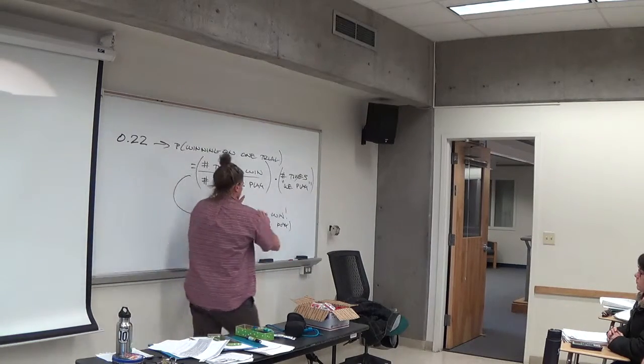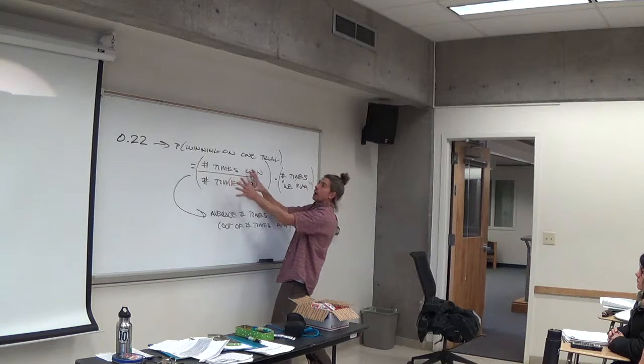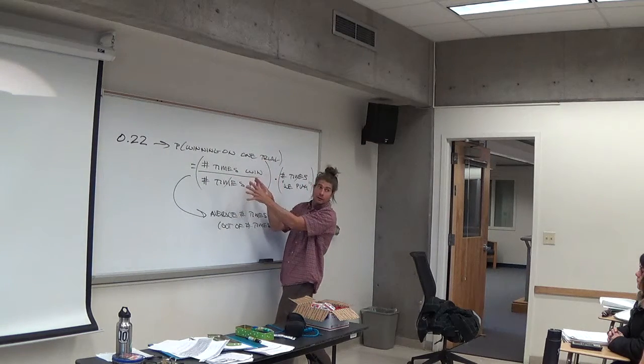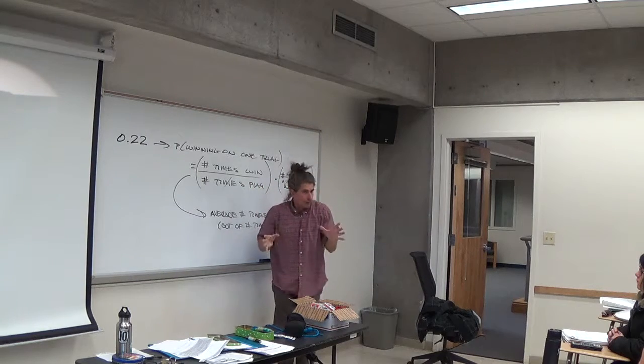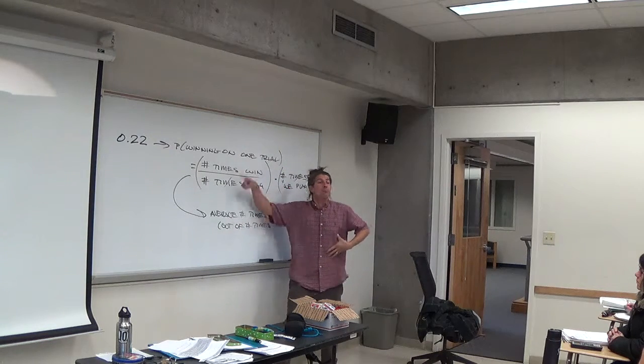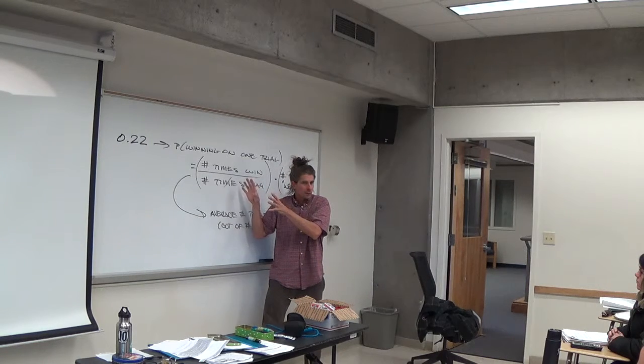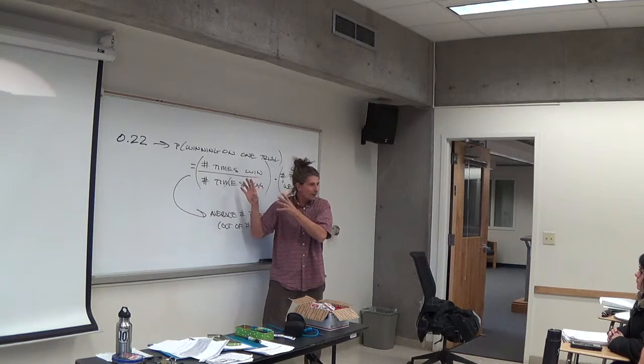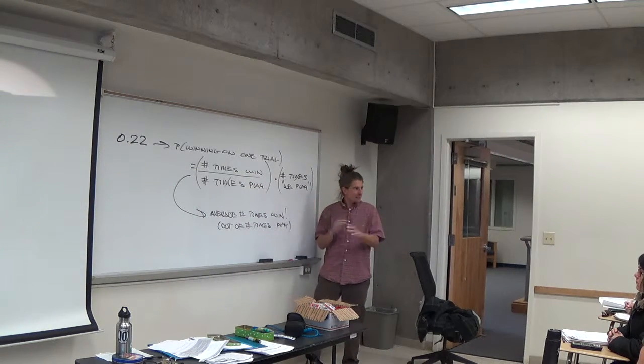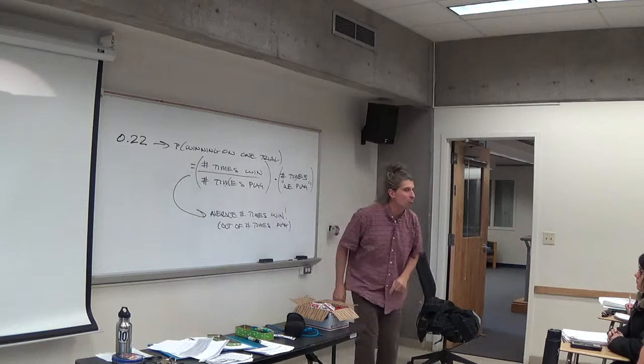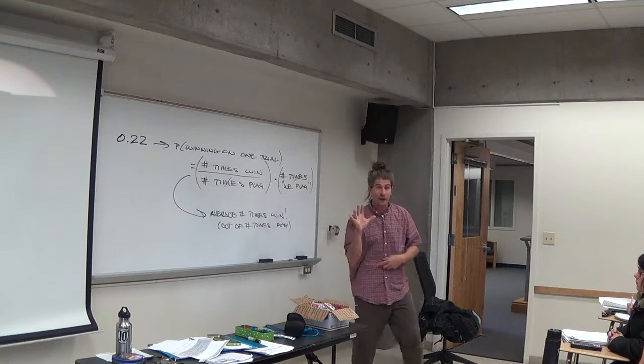So the number of times we win over the number of times we play. Right. So this is the definition of the probability of winning on one trial. It's the number of times you win divided by how many times you play. If you multiply that rate of winning, this is really, if you think of it this way, it's a rate of winning. Okay. It's a percentage of the time you will win. If you multiply that percentage by the number of times you play, that will cancel out and tell you how many times you should expect to win. Once. You should, right. In this case, once because we're playing five times. Michelle, go.